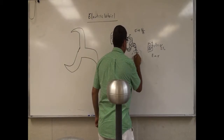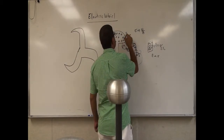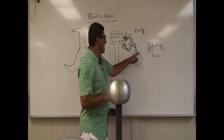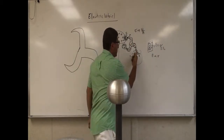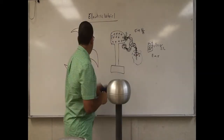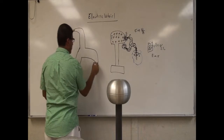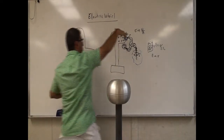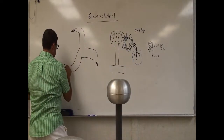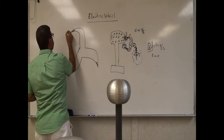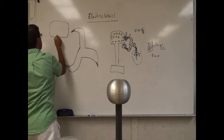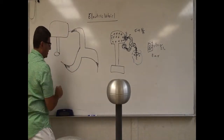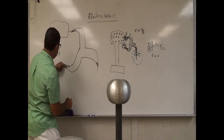So the region around the pointy end is left with net positive charge. From a top view looking down at the electrical world, this region of positive charges is going to repel that pointy edge. The air here is repelling it one way, and the air on the other sides is repelling it in other directions. This is the Van de Graaff generator on one side.